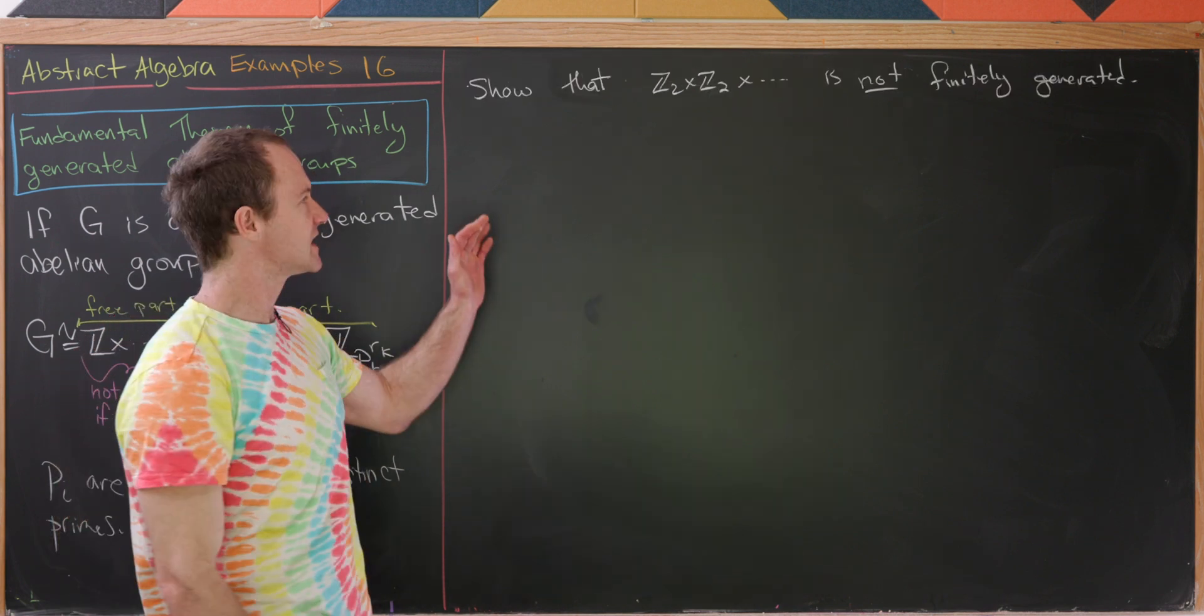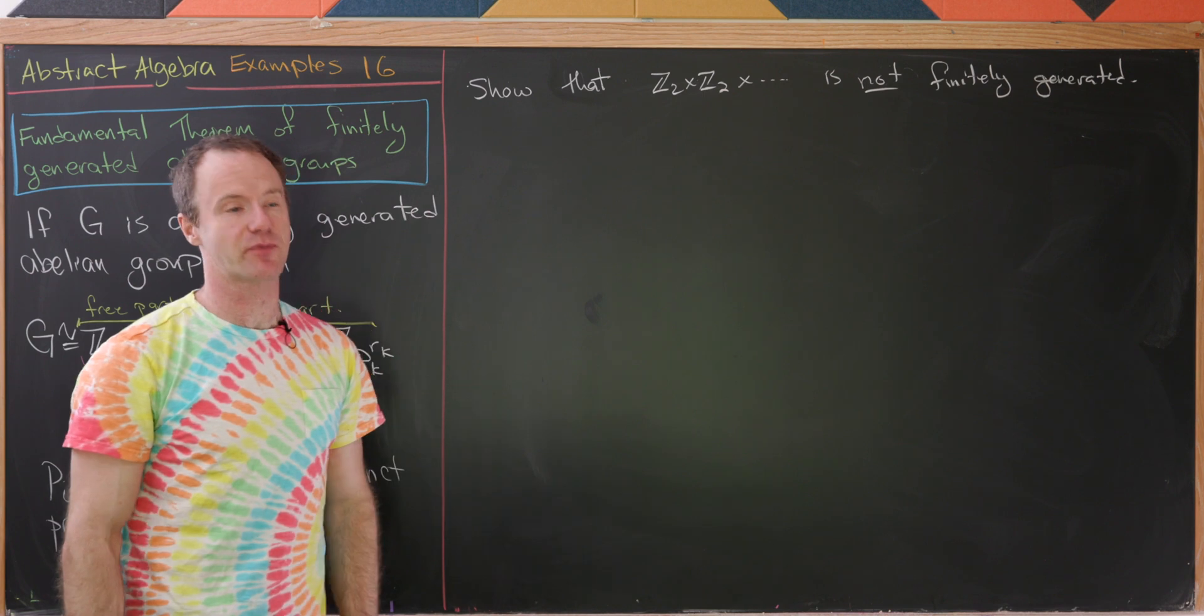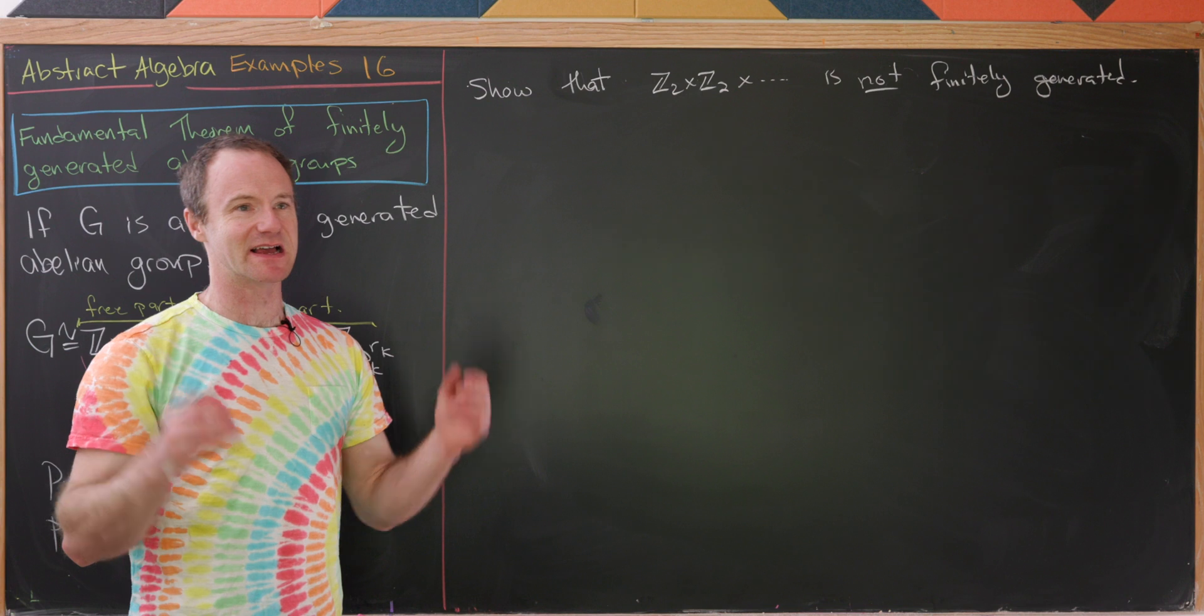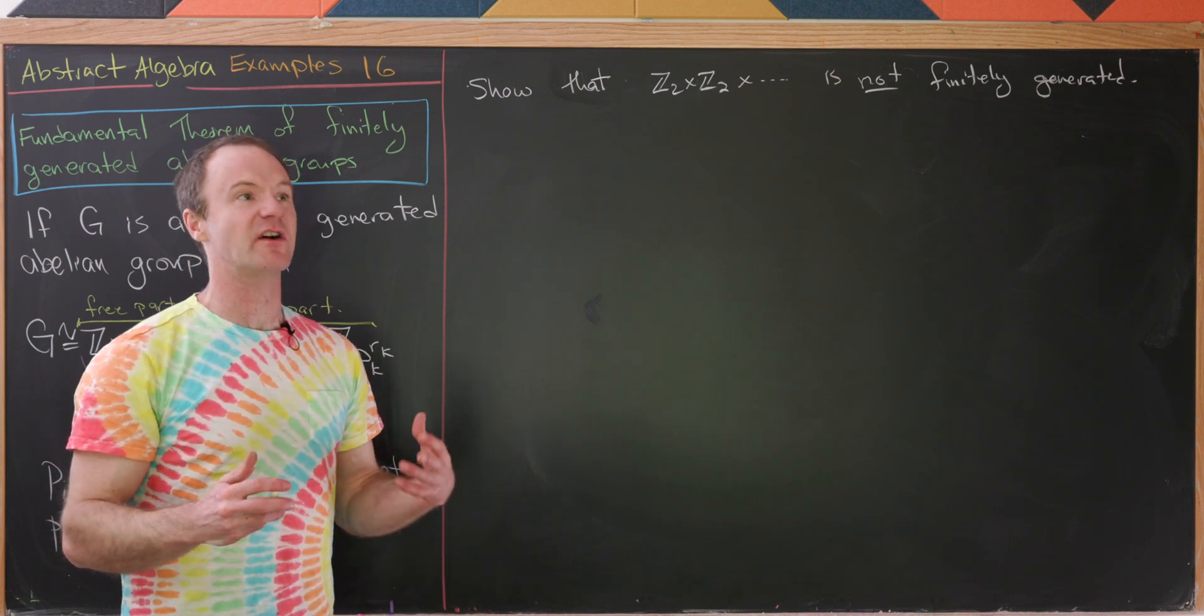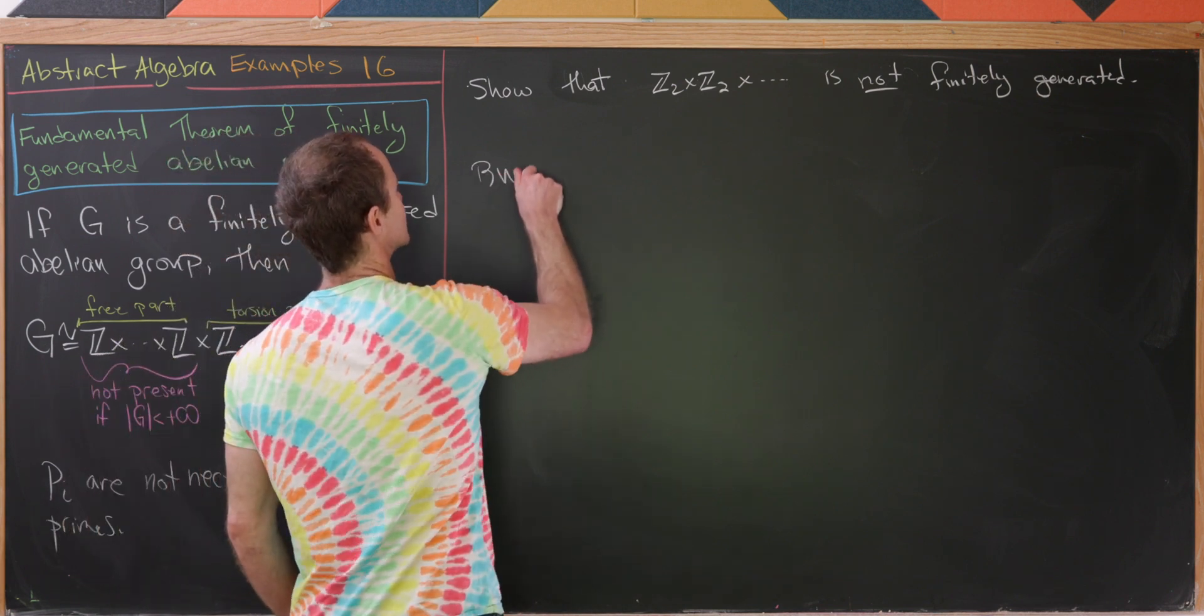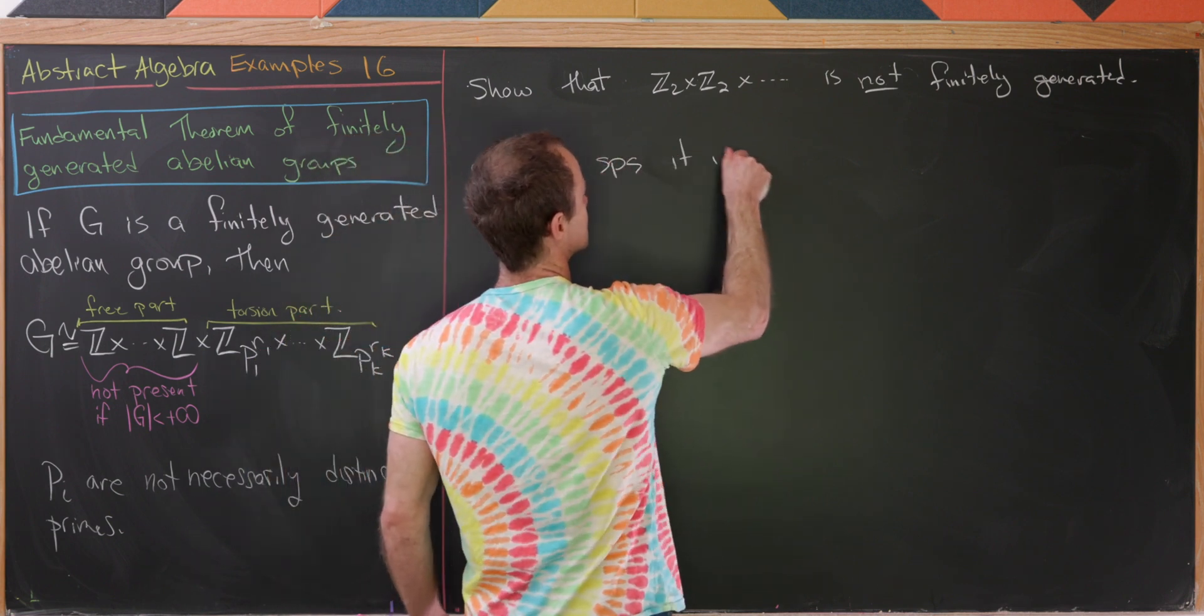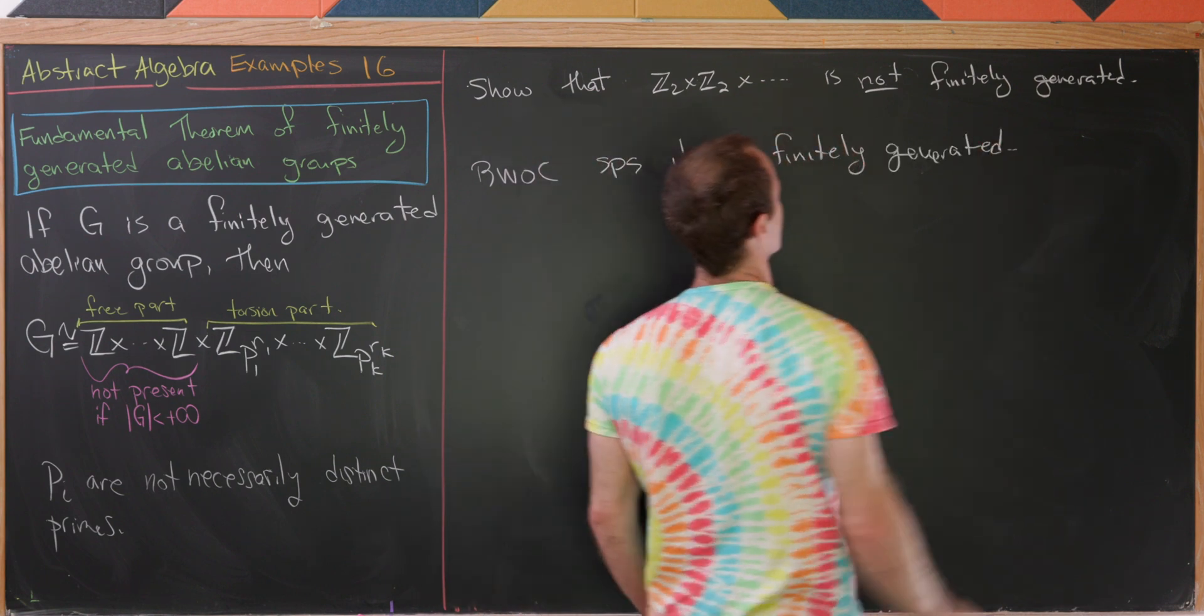Next up, we'll show that Z2 cross Z2 cross Z2, an infinite product of Z2's, is not finitely generated. And I think this is like evidently true, but let's maybe hit it with a very large hammer just to practice some techniques. So let's, by way of contradiction, suppose it is finitely generated.